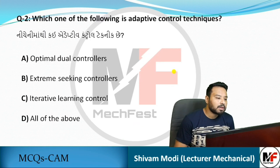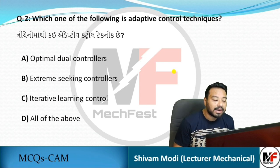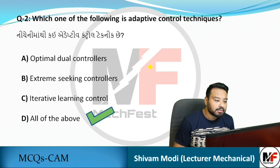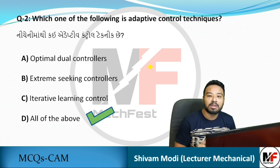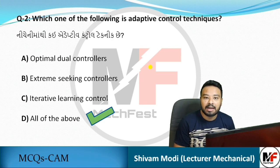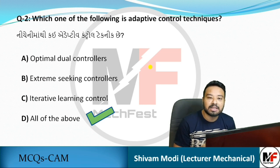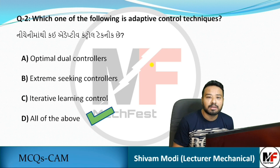Next question: which of the following is an adaptive control technique? Options include optimal dual controllers, extreme seeking controllers, and interactive learning controllers. The answer is all of the above. Note: as per GTU exam guidelines, questions with 'all of the above' or 'none of the above' options are generally not asked in the exam — this is included just for your knowledge.